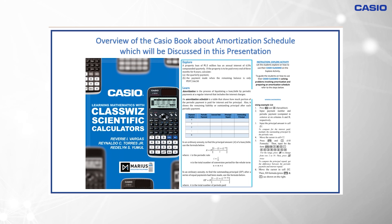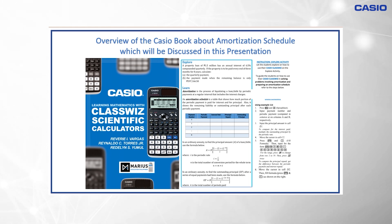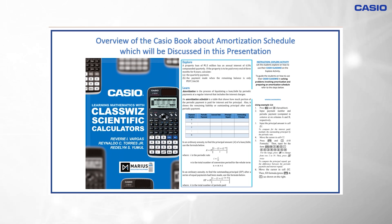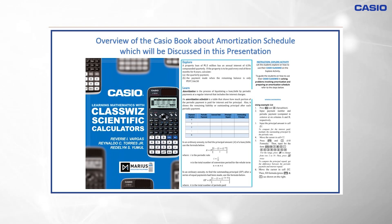To begin with, amortization is the process of liquidating a loan or debt by periodic payment at a regular interval that includes the interest charges. An amortization schedule is a table that shows how much portion of the periodic payment is paid for interest and for principal. Also, it shows the remaining liability or outstanding principal after each periodic payment.